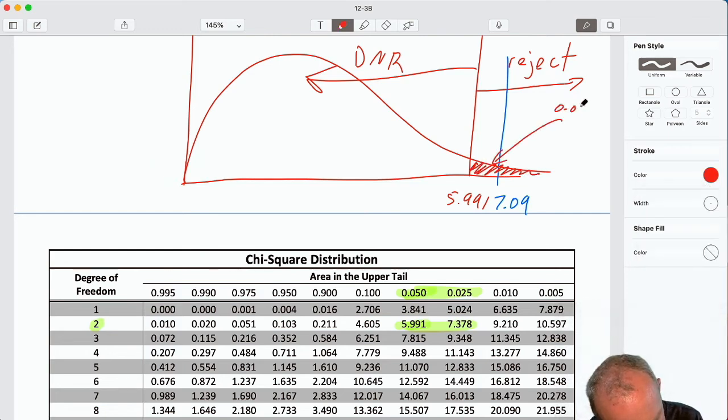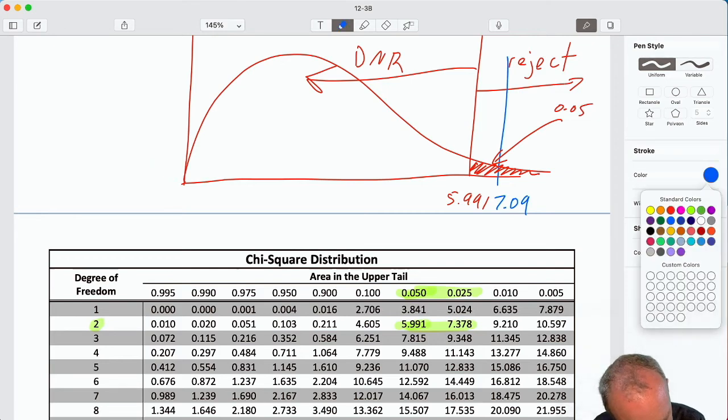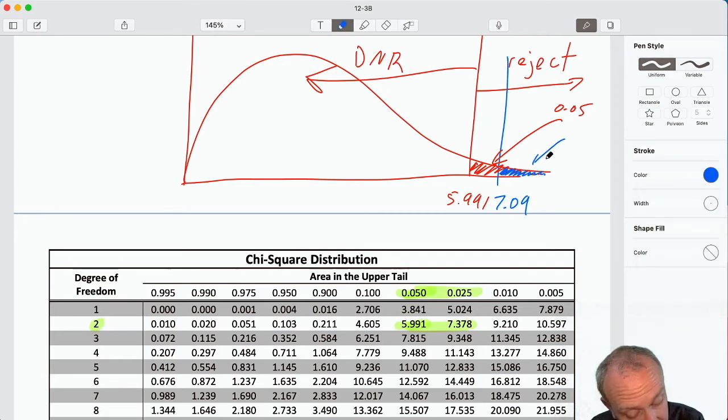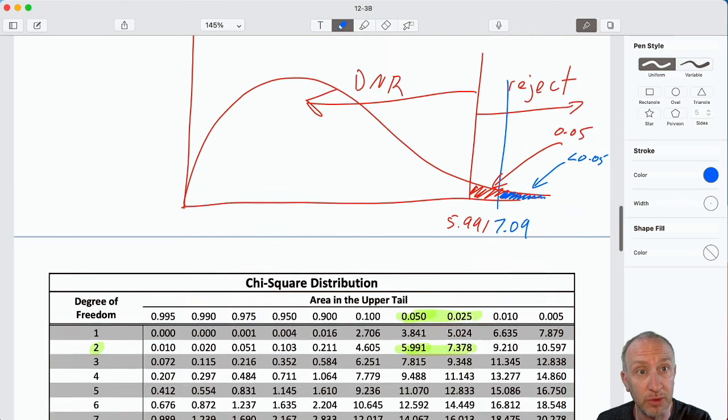So again, if I have my test statistic here, well certainly if this region here is equal to 0.05, well this region here that corresponds with my test statistic is certainly something less than 0.05. So we find consistent results again, as we always should, using the critical value approach and the p-value approach.